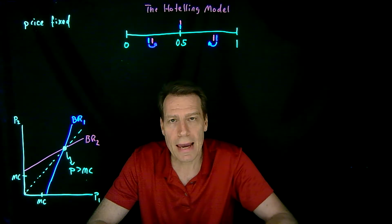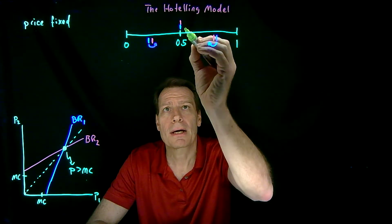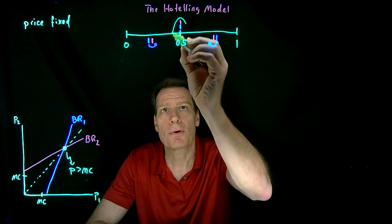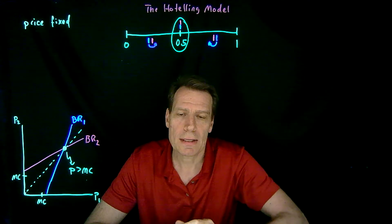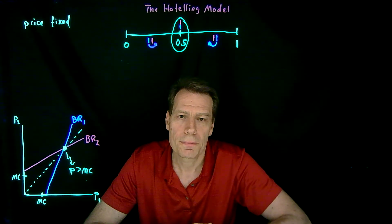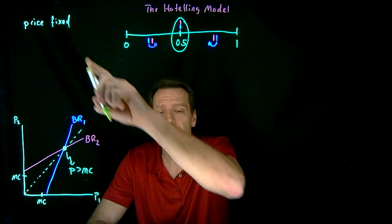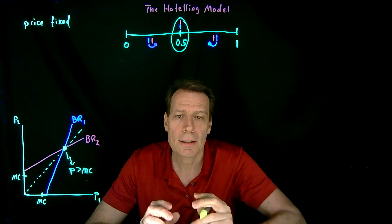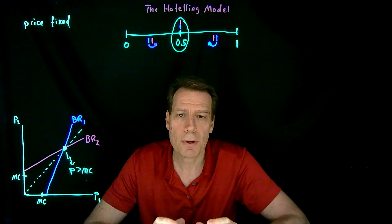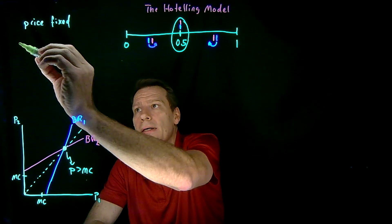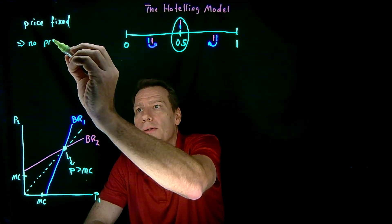So the Nash equilibrium in this model becomes for both firms to settle at the midpoint of that interval. The curious result, if price is not a strategic variable and the only strategic variable is to choose your product characteristic, is that there will be no product differentiation.